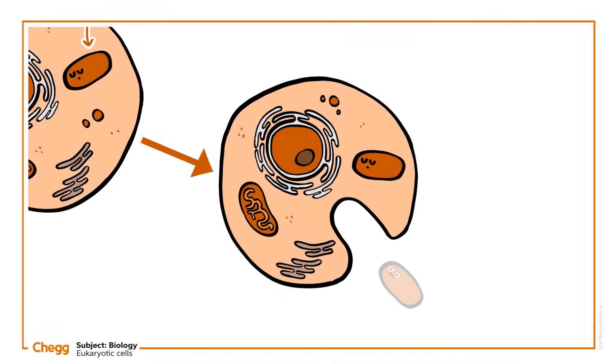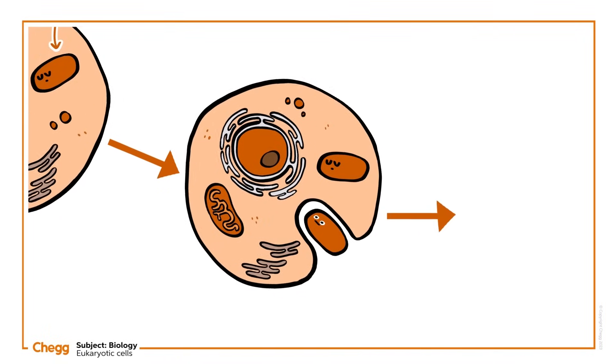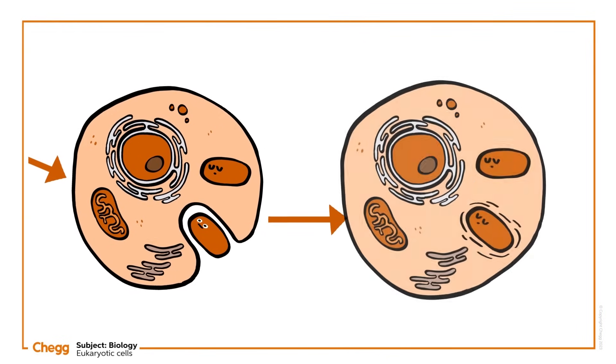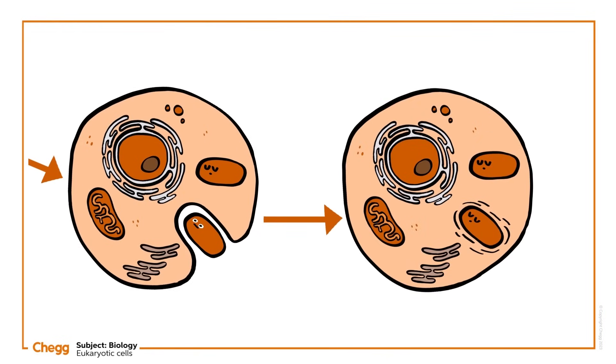Similarly, a small photosynthetic prokaryote was engulfed. Losing its now-redundant cell wall, it eventually became a chloroplast.